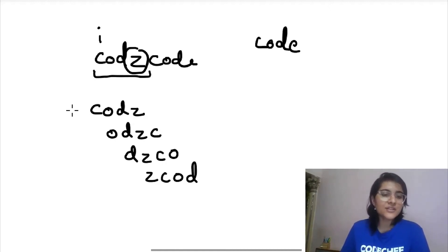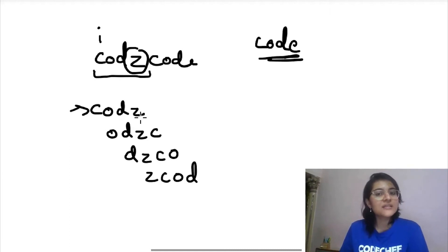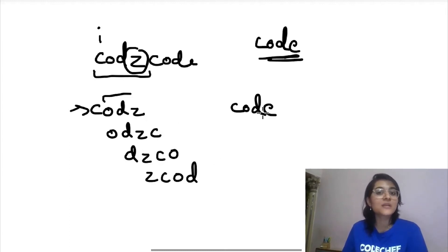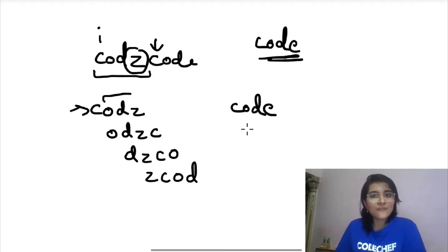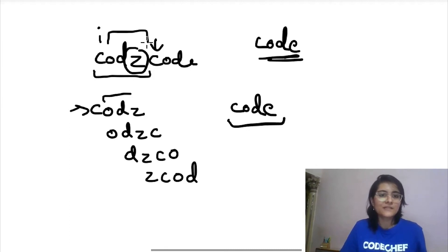Without KMP, if we check 'codz' and it mismatches, even though we know 'code' cannot start from the next few characters, we still check substrings 'odzc', 'dzco', 'zcod'. KMP would let us skip directly to the next valid starting index. However, both strings we're checking are of length 4, so we only take at most 3 extra iterations — a constant.